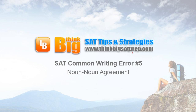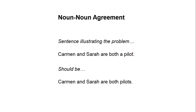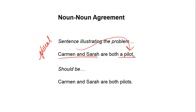It's called noun-noun agreement. The first thing we're going to do is look at a simple sentence that illustrates this particular writing problem: 'Carmen and Sarah are both a pilot.' Notice that the compound noun 'Carmen and Sarah' is plural — we're talking about two people — but it refers to 'a pilot,' which is singular.